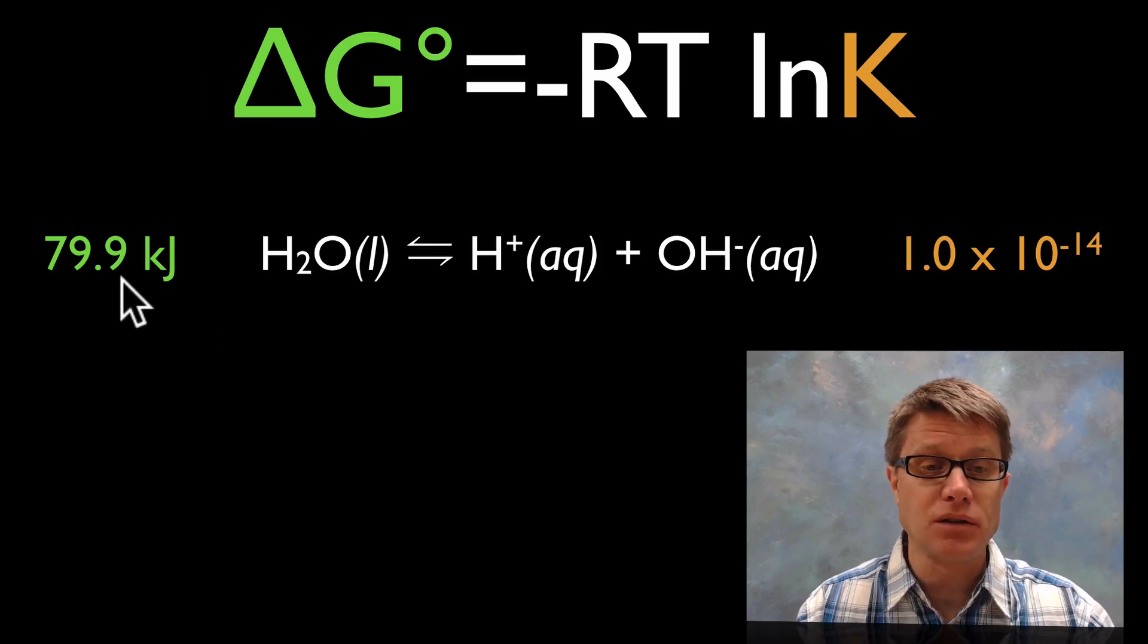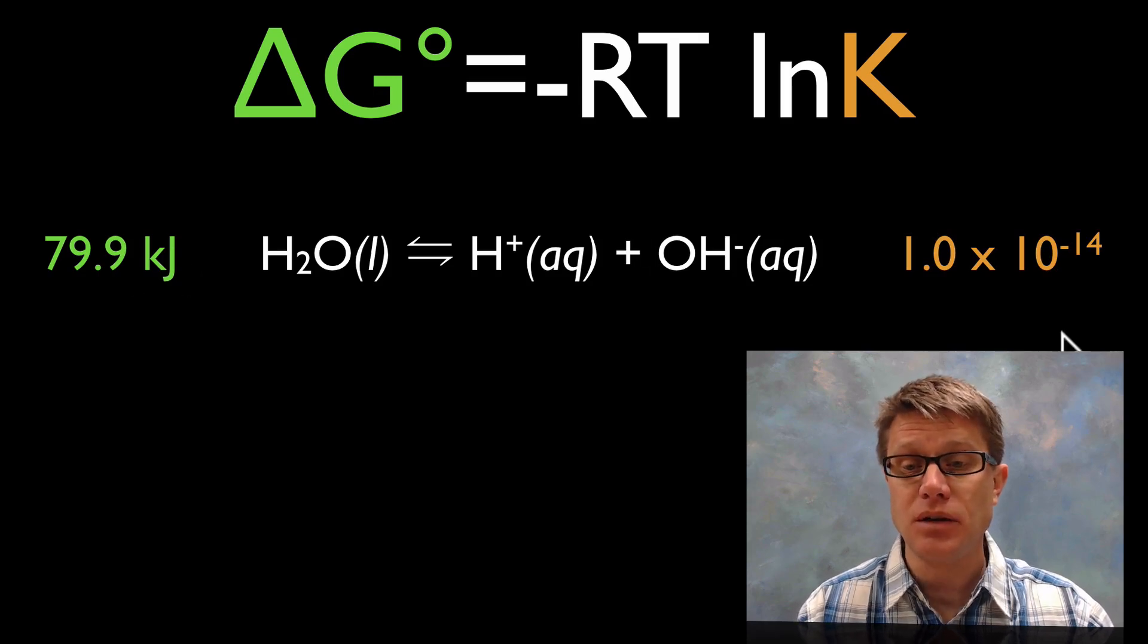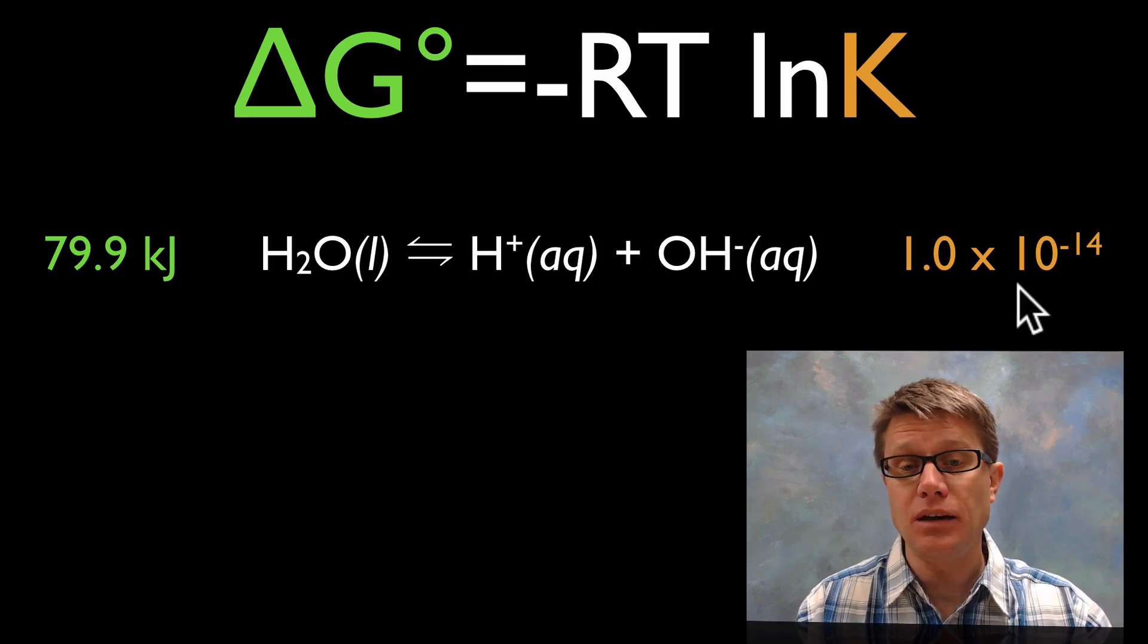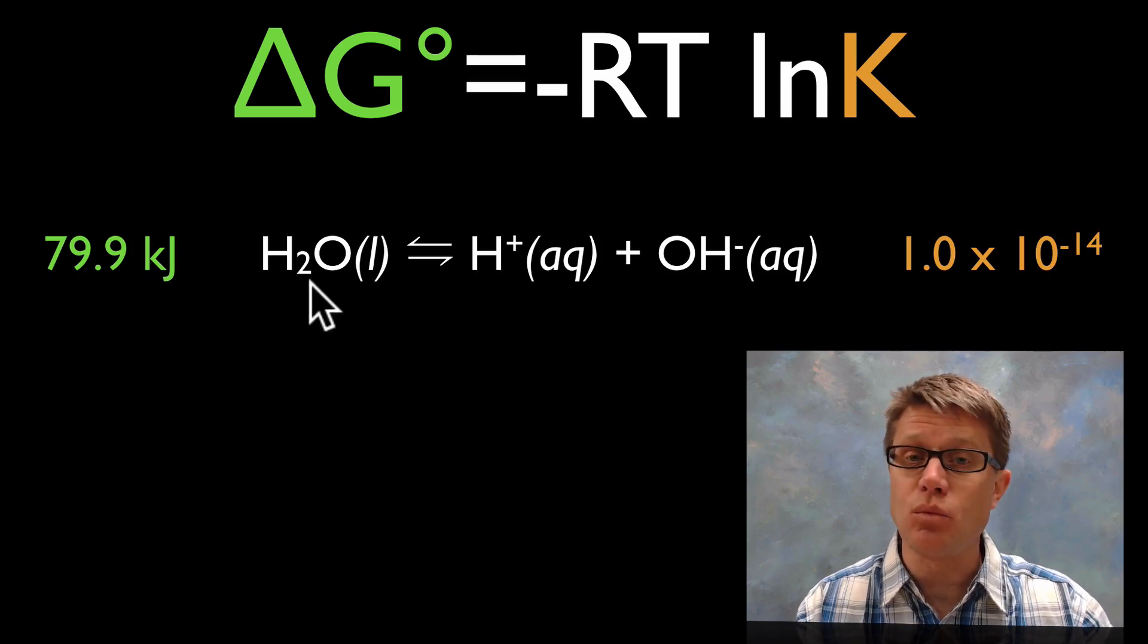What do we know about a positive delta G? That means it's an uphill reaction, non-spontaneous reaction. What do we know about a really small K value? That means it's going to be shifted more towards the left, or shifted more towards the reactants in this case.